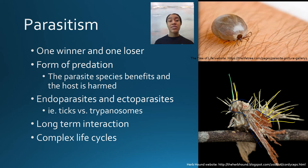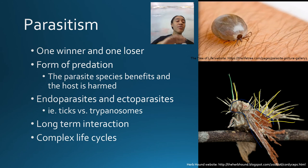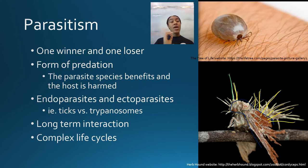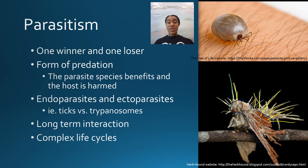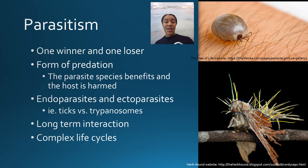Many parasites have a two-part life cycle. For example, in the case of toxoplasmosis, the parasite goes from a mouse but really wants to be in a cat. So it changes the behavior of the mouse to make it exhibit more dangerous behaviors — making it more likely to get eaten by a cat. And then once it's in a cat, that's where it wants to be. That's a really complex and far more interesting life cycle than most.